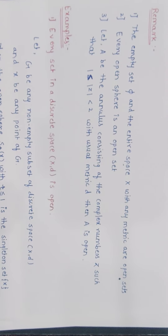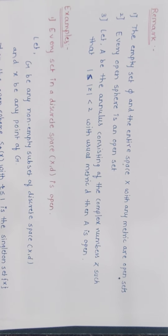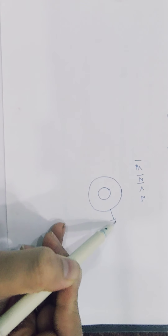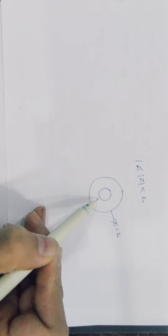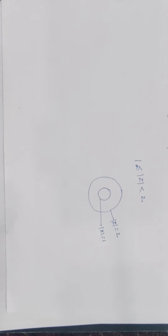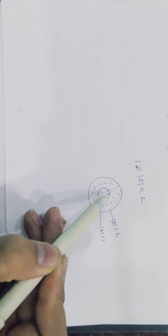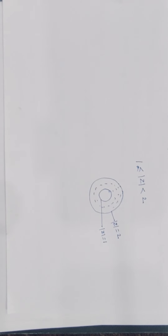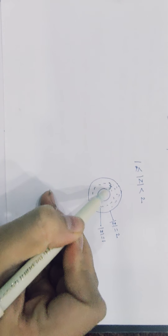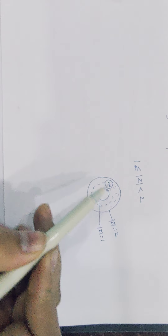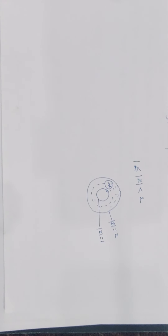Example: let A, B be an annulus consisting of complex numbers z such that 1 < |z| < 2 with usual metric d — this is an open set. Yahan complex plane mein ek annulus liya — |z| = 2 aur |z| = 1 ki boundaries ke beech ke points, jahan 1 < |z| < 2. Yeh annulus hai. Iske andar ka koi point x liya, uska neighborhood iss form mein mil sakta hai jo set mein hi rahega. Therefore, this annulus is also an open set.